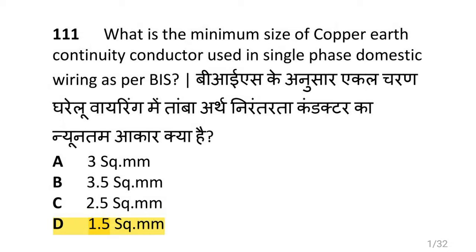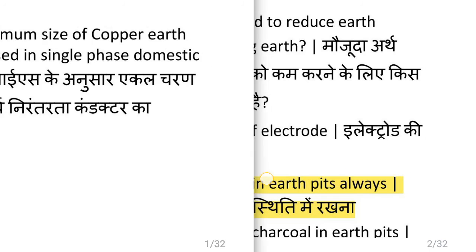We are going to see wiring installation and earthing. What is the minimum size of copper earth continuity conductor used in a single phase domestic wiring as per BIS? That is 1.5 square mm.